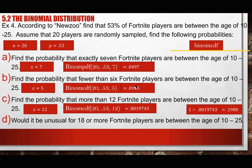To summarize: if you find the item on the left (fewer than, less than), the calculator gives you the answer directly. If you find the item on the right (more than, greater than, at least), you take one minus the calculator's answer. That's the key distinction for using binomial CDF.